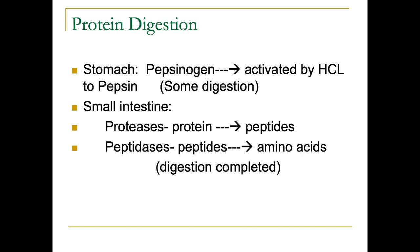Proteins are digested beginning in the stomach when the enzyme pepsinogen is activated by hydrochloric acid into pepsin, and this is where large proteins start getting broken down into peptide chains. Once food passes into the small intestine, proteases break protein down into peptides, and peptidases break those peptides down into amino acids. Once digestion is completed, these amino acids can be absorbed into the small intestine.